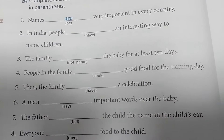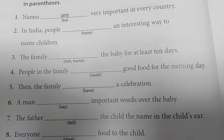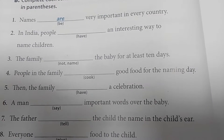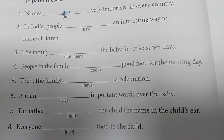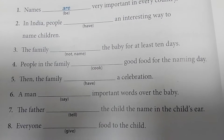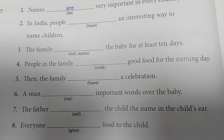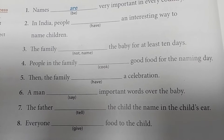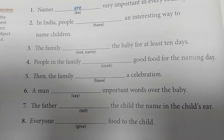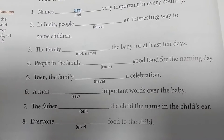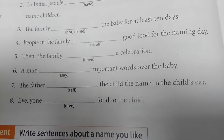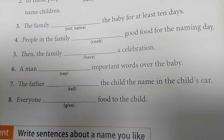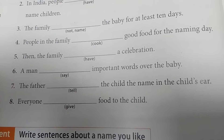Number 4: People in the family cook good food for the naming day. Number 5: Then the family have a celebration. Number 6: A man says important words over the baby — S-A-Y-S, says. Number 7: The father tells the child the name in the child's ear.